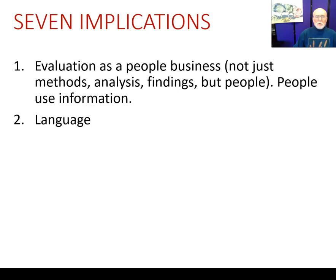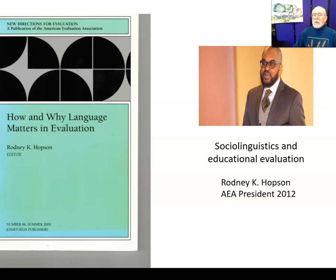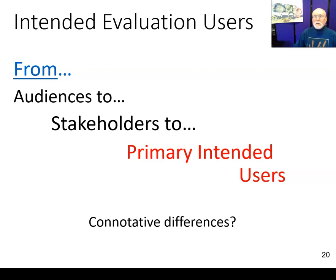The second implication was the importance of language — how we talk about things. Rodney Hobson, former AEA president, edited a book of new directions for evaluation on how and why language matters, which several of us contributed to. The discussion includes moving from talking about audiences to stakeholders to primary intended users. Notice the connotative difference between doing an evaluation for an audience or for vague stakeholders versus doing it for identifiable primary intended users. That's what utilization-focused evaluation is based on.